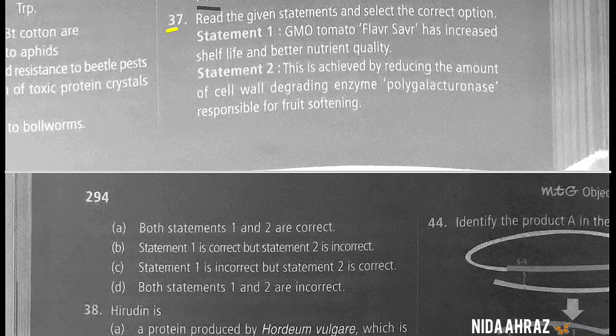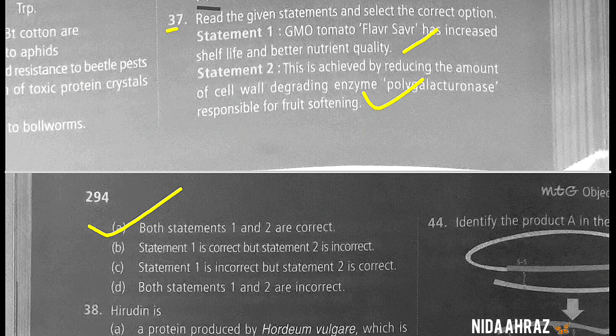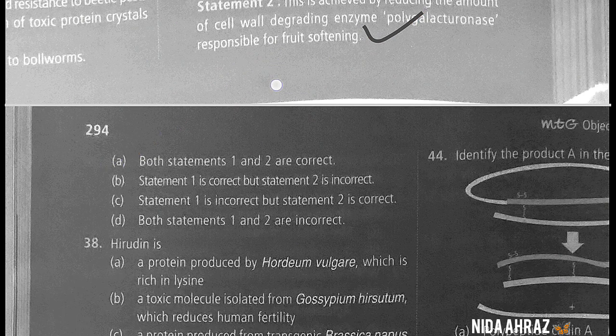Statement one: GMO tomato Flavr Savr has increased shelf life and better nutrient quality — correct. Statement two: this is achieved by reducing the amount of cell wall degrading enzyme polygalacturonase responsible for fruit softening — correct. So both statements are correct.